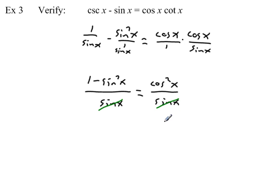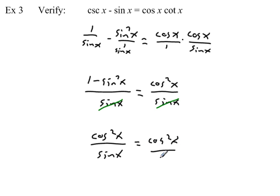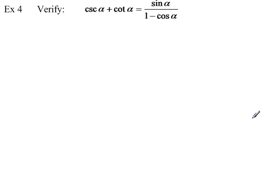The right side becomes cosine squared of x over sine of x. Since both sides are over sine of x, we just compare the numerators: one minus sine squared of x equals cosine squared of x, which is exactly the Pythagorean identity. We've verified that the original equation is always true for any value of x.